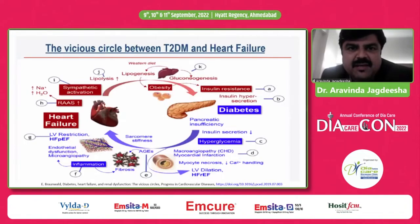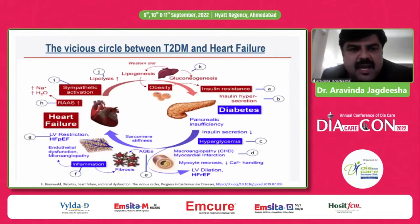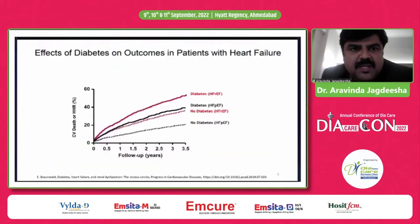This slide illustrates the vicious cycle between type 2 diabetes and heart failure. You can see on the right-hand side the pancreas and on the left-hand side the heart, with various mechanisms interlinked between hyperglycemia and heart failure, with obesity in between. There is a cycle which is interlinked between diabetes and heart failure.